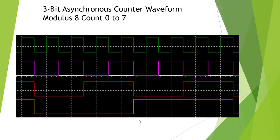Here's the output of the asynchronous counter. It's the same as the three-bit synchronous counter except for the little bit of delay, which I'll cover here in a second, but basically it's a count from zero to seven, divided by eight.